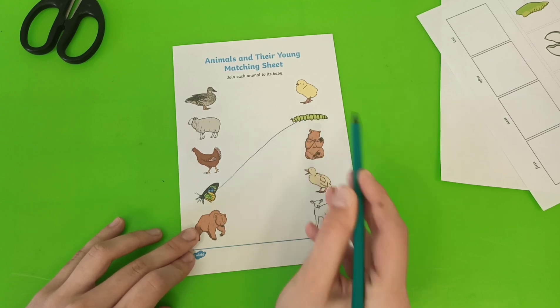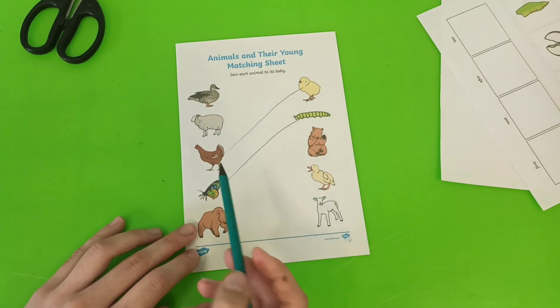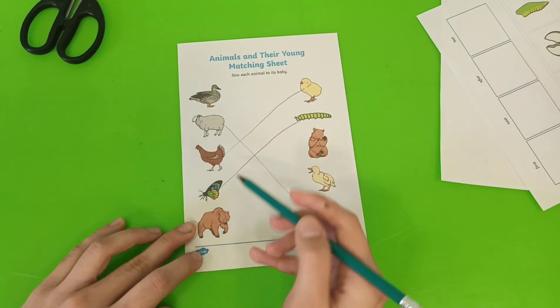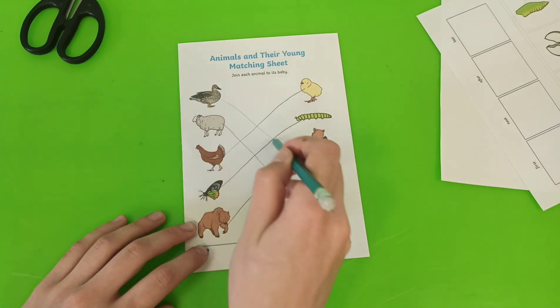Butterfly's baby is caterpillar. Hen's baby is chick. Sheep's baby is lamb. Bear's baby is bear cub. And duck's baby is duckling.